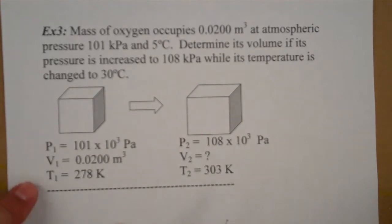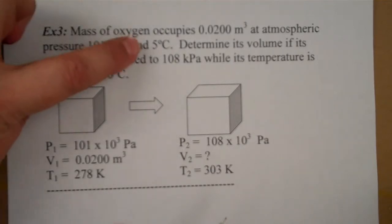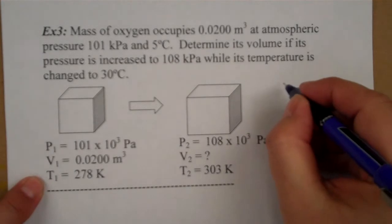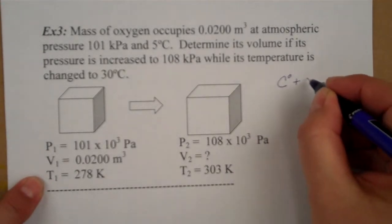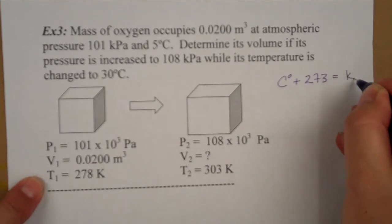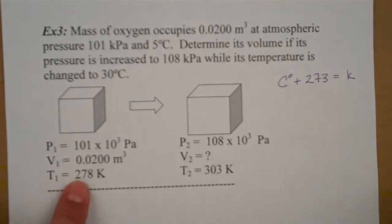So we're given all the initial conditions: initial pressure, initial volume. What you do need to be careful is that you change that temperature of 5 degrees Celsius into Kelvin. Remember our conversion is degrees Celsius plus 273 will give us degrees in Kelvin, so 278.